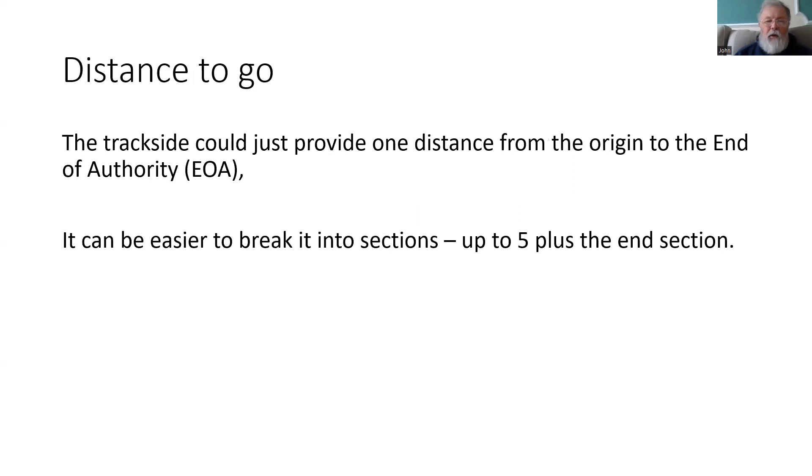Sometimes it's easier to break the distance up into sections, particularly if the railway is divided into block sections. One section can represent from one marker to the next or one limit to the next. You can have up to five sections within a movement authority, plus the end section.